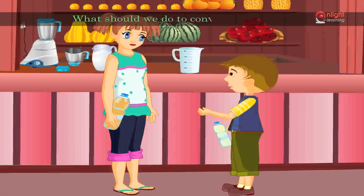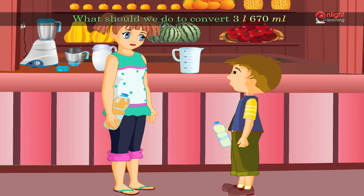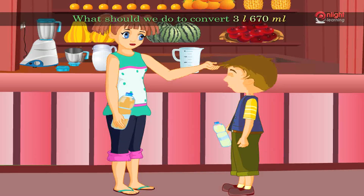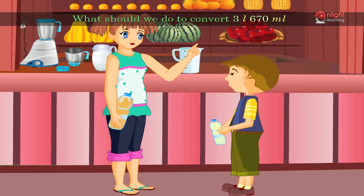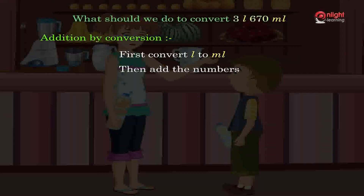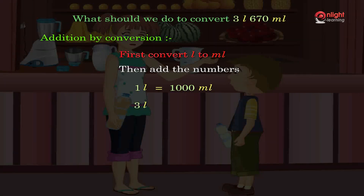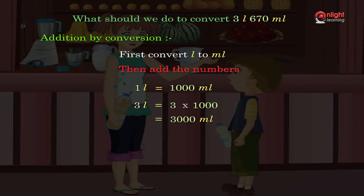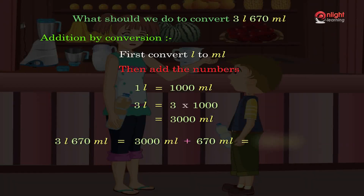To convert 3 liters 670 milliliters by the conversion procedure: first convert liters to milliliters, then add the numbers. Step one — convert 3 liters: 3 multiplied by 1000 is equal to 3000 milliliters. Step two — add: 3000 milliliters plus 670 milliliters is equal to 3670 milliliters.